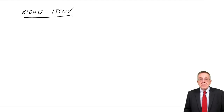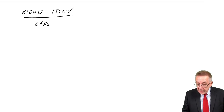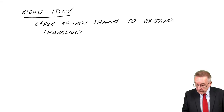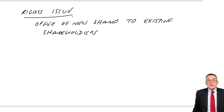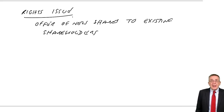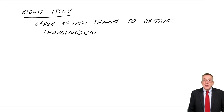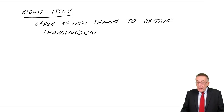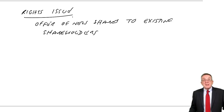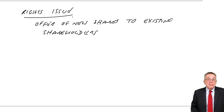A rights issue is an offer of new shares to existing shareholders. Instead of going through all the expense and formalities of offering new shares to the general public, they simply write to all the existing shareholders and ask them if they want to buy some new shares. It's a lot cheaper. The shareholders don't have to buy — they fill in the form and say yes or no.